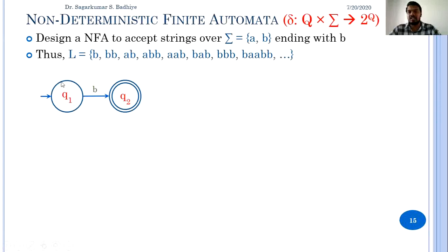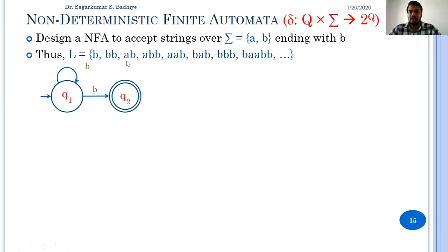Consider the first case: from q1 the automata reads the first B and goes to q1, and on reading the next B it goes to q2. So BB will be accepted. Similarly, strings with n number of B's will be accepted. For the string AB, the automata must read A in q1 and then B, so that when the next B is read it goes to the final state.